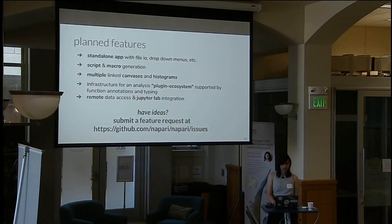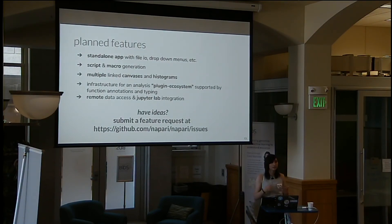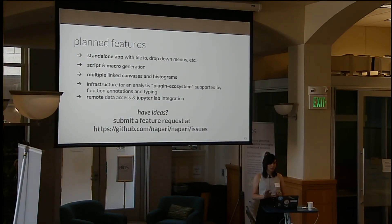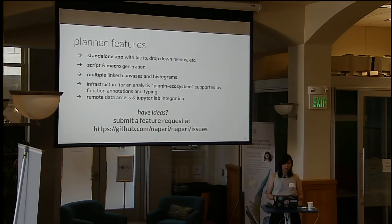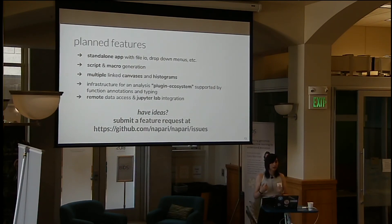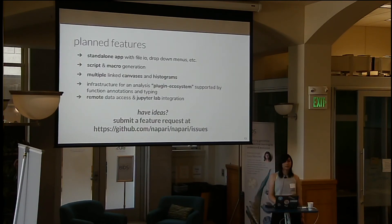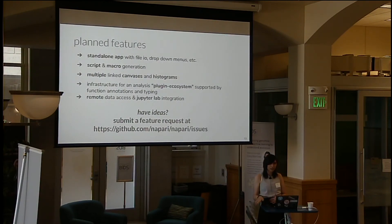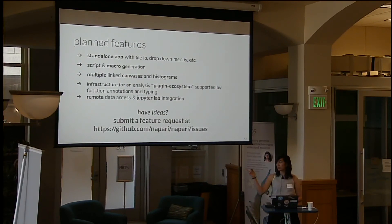These are our planned features. We want to have a standalone app with things like file IO, drop-down menus, etc. We want full script and macro generation, multiple linked canvases and histograms, and an infrastructure for a plugin ecosystem, kind of like what you just saw in the last example. We also plan to have remote data access and Jupyter Lab integration. If you have any ideas, please submit a feature request at the link above.